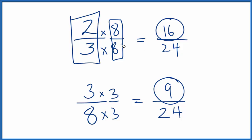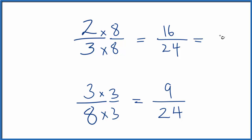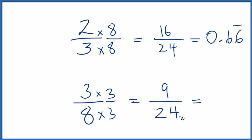We could also convert 2 thirds, or 16 24ths, to a decimal. So 2 divided by 3, or 16 by 24, gives you 0.66. And that number repeats. 9 divided by 24, that gives you 0.375.